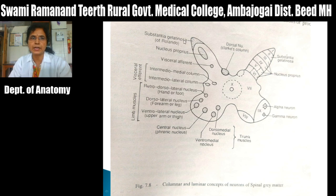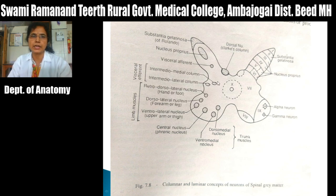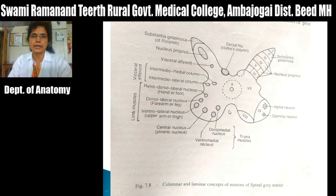In the posterior horn there are different nuclei: at the tip there is the nucleus posteromarginalis, then substantia gelatinosa, nucleus propria, visceral afferent nucleus, and dorsal nucleus or nucleus of Clark's column. In the lateral horn there are two nuclei: intermediomedial and intermediolateral. The ventral horn is divided into three nuclear groups: lateral, central, and medial.